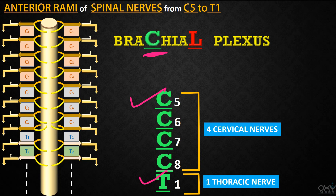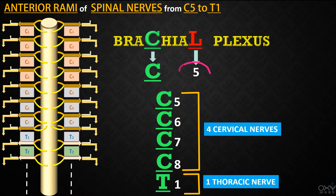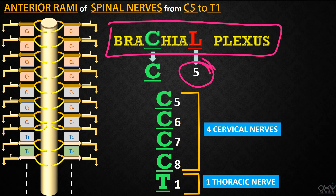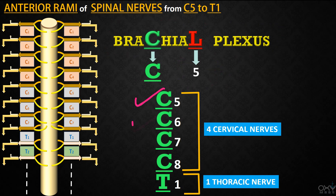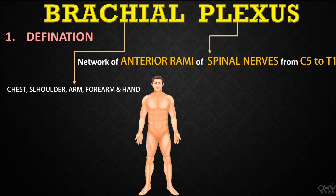It is very simple. The C in 'brachial' will remind you that the brachial plexus starts from a cervical nerve. The L in 'brachial' will remind you of the fifth cervical segment, because the coding for L is 5. That number 5 also reminds you that the brachial plexus is formed from five nerves: C5, C6, C7, C8, and T1. In this way, the word 'brachial' helps you remember all these things.